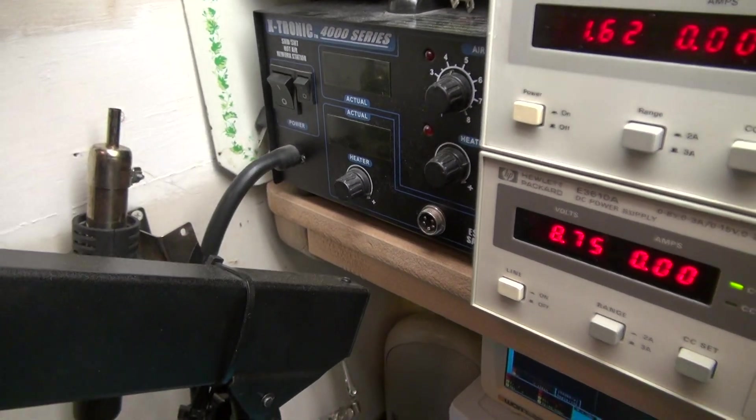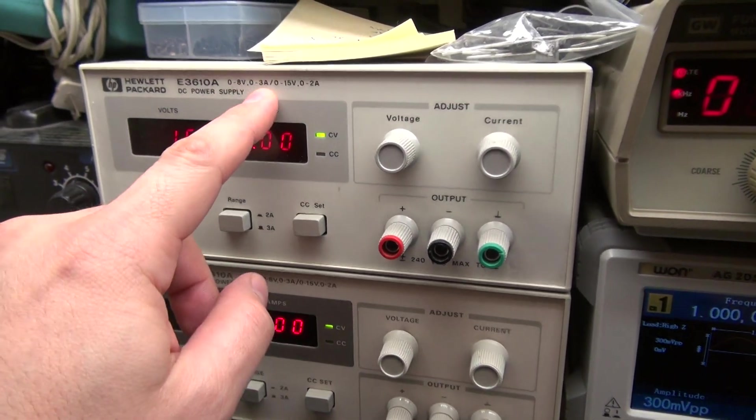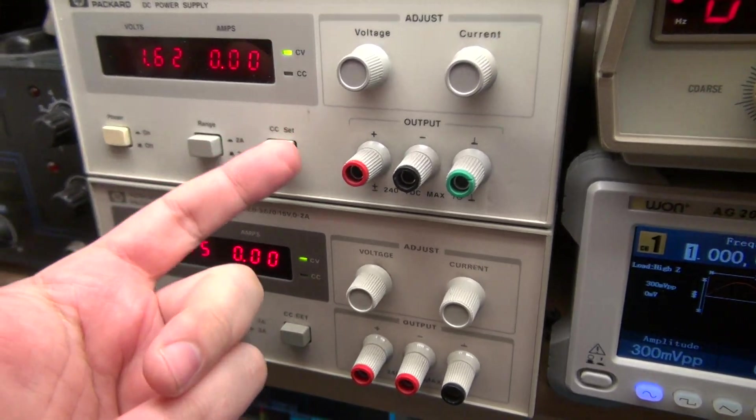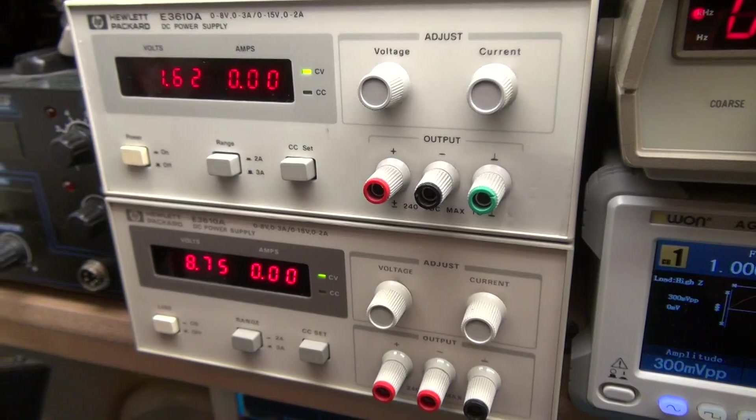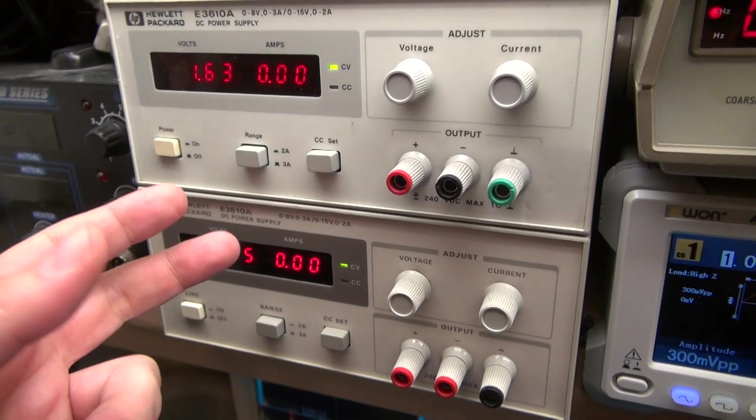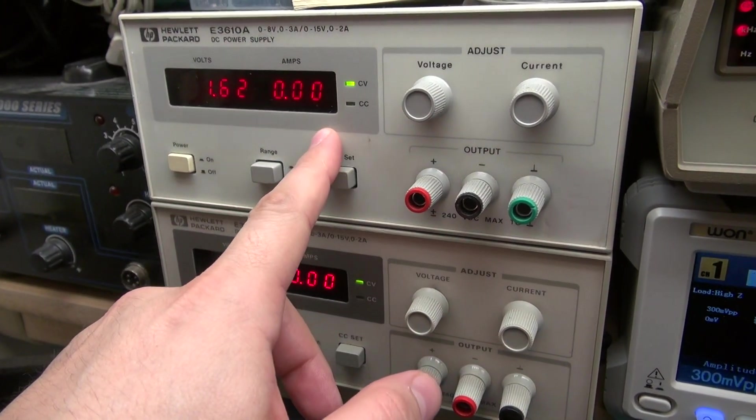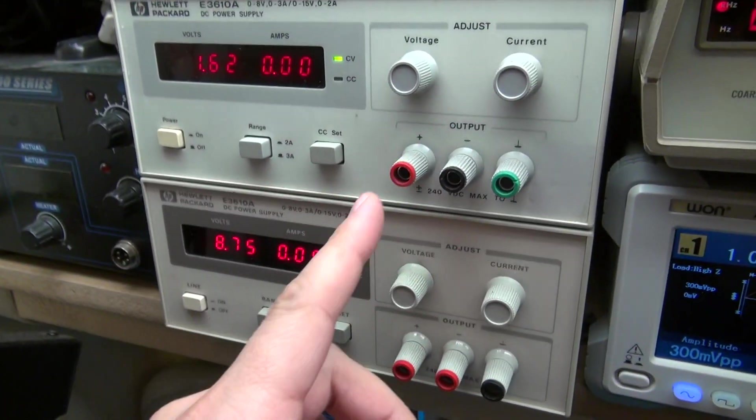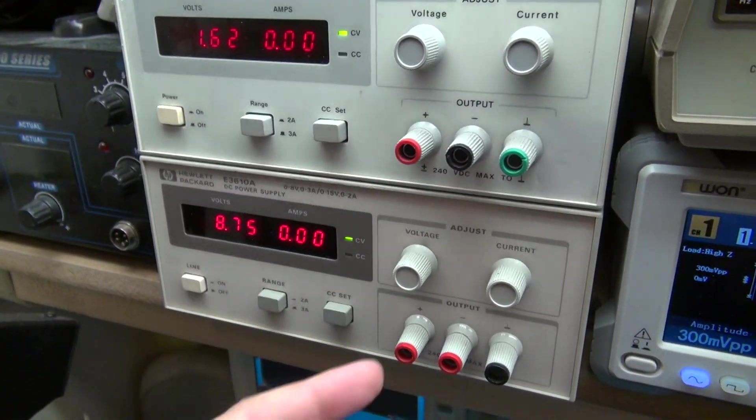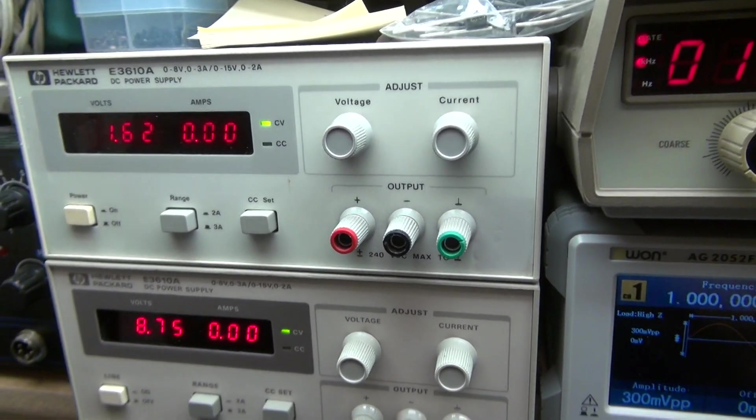These two power supplies here, the HP 3610A, zero to 8 volt, zero to 3 amp, or zero to 15 volt, zero to 2 amp. Very handy to have on the shop. You can get these on eBay relatively cheaply. I think I got these really cheap. I am looking at thinking about getting a newer power supply so I can get more resolution on my current and whatnot, but these are perfectly fine. You can use two of these to create a dual supply, or it's easy enough to do. You just hook your positive negative and use your other terminals for your positive negative supply. Very nice, they do work well. They are HP, so you're getting quality.